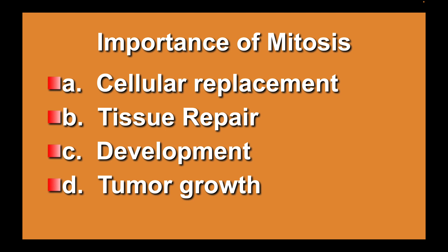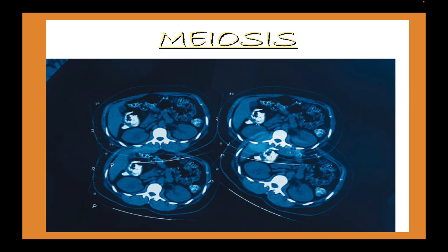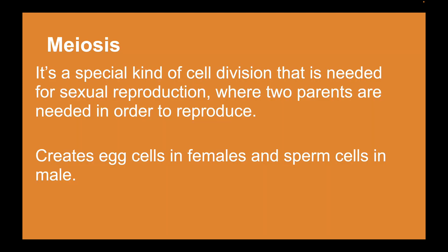Now, meiosis is a special kind of cell division needed for sexual reproduction, where two parents are required. Meiosis creates egg cells in females and sperm cells in males.